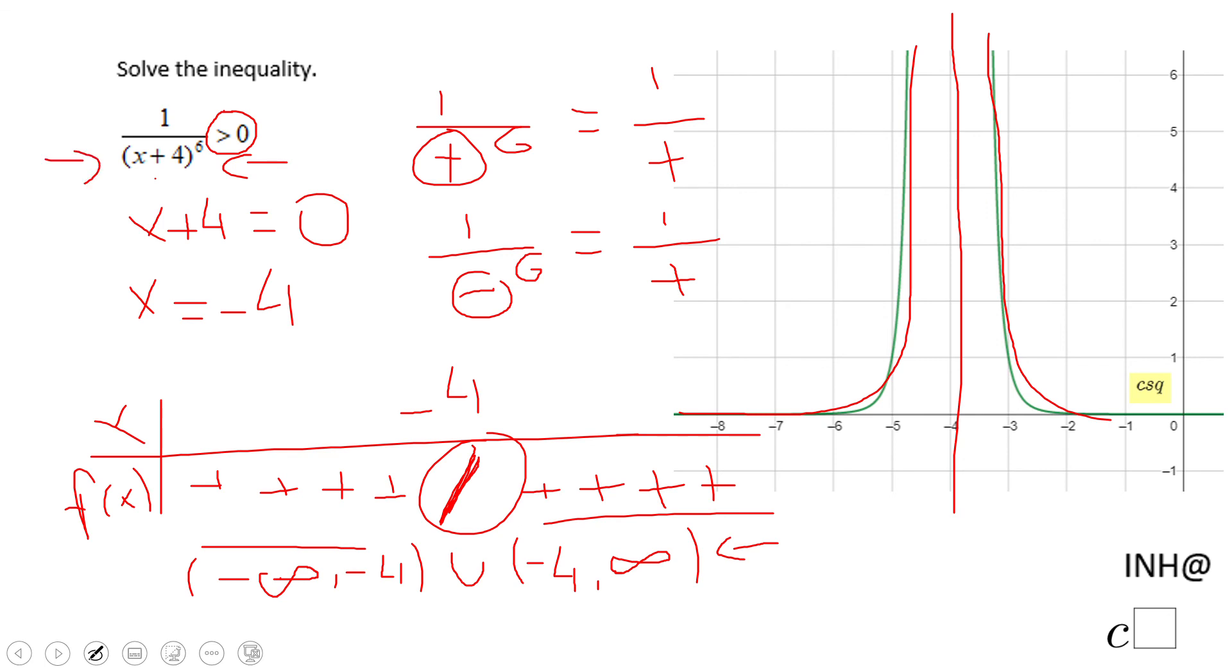Of course, this problem can be done just by inspecting and noticing that x plus four to the sixth power is always positive, so the rational function is going to be positive all the time. The only problem is at x equals negative four, when this rational function is undefined. If you enjoyed this video, don't forget to click the like button and come back to C-squared for more help. Thank you.